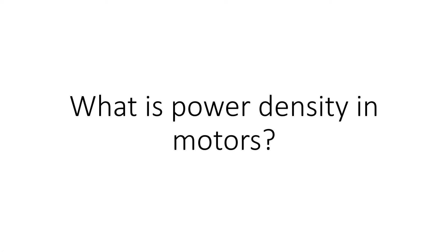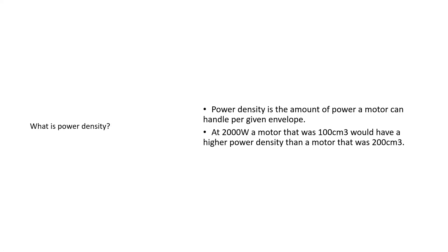What is power density in motors? Power density is the amount of power that a motor can deliver per given volume. For example, at 2000 watts, a motor that was 100 cubic centimetres would have a higher power density than a motor that was 200 cubic centimetres — based on the fact that both motors would be delivering 2000 watts.